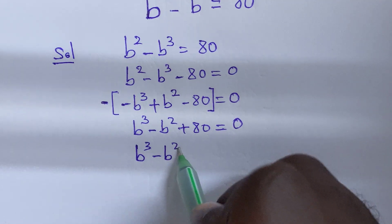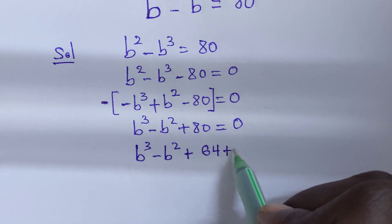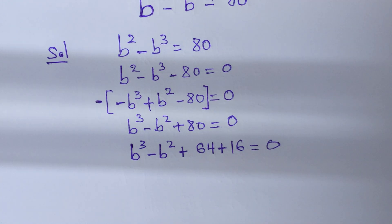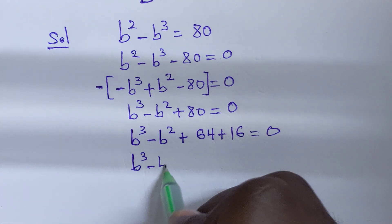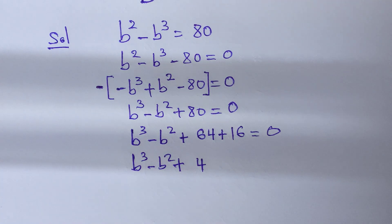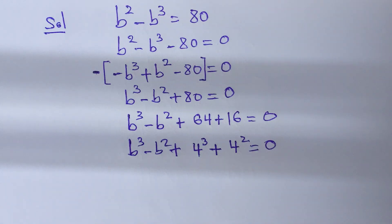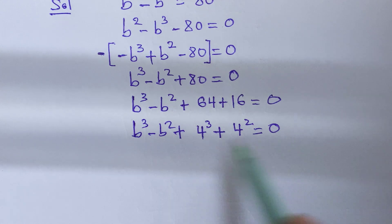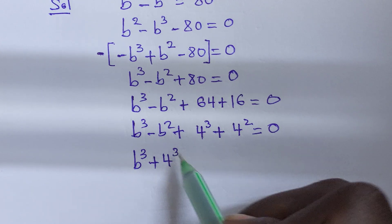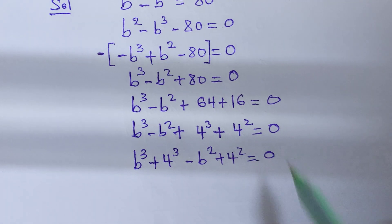This gives us b to the power of 3 minus b squared plus 80 equals 0. Now we split 80 as 64 plus 16, since 64 plus 16 equals 80. We rewrite 64 as 4 cubed and 16 as 4 squared, giving us b cubed plus 4 cubed minus b squared plus 4 squared equals 0.